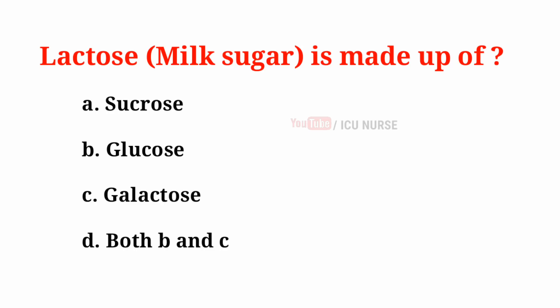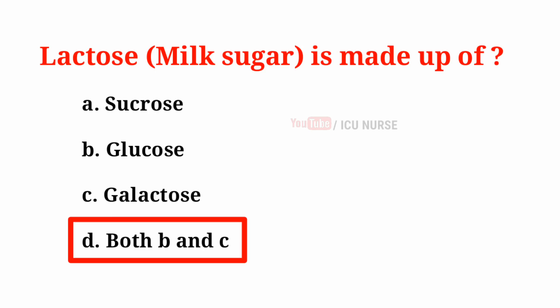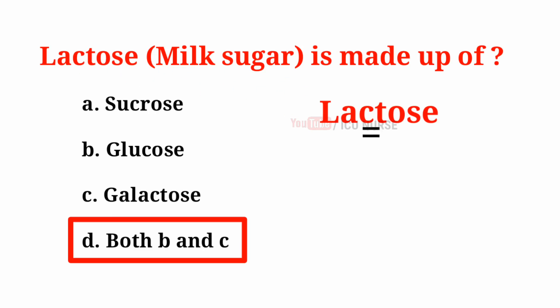Lactose is made up of: A. Sucrose, B. Glucose, C. Galactose, D. Both B and C. And the correct answer is D, both B and C. Lactose is made up of glucose and galactose.